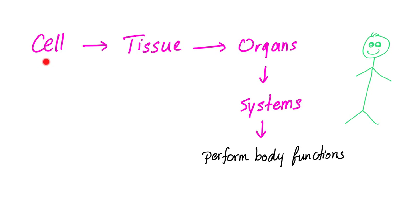A group of cells will form a tissue. A group of tissues will form an organ. A group of organs forms systems, such as the circulatory system, the respiratory system, the genitourinary system, and so on. The systems perform body functions.